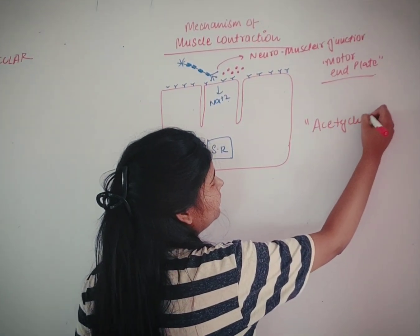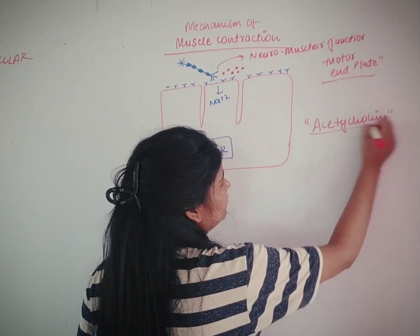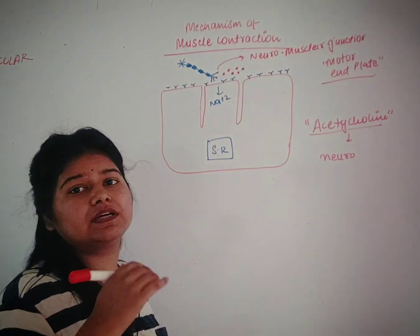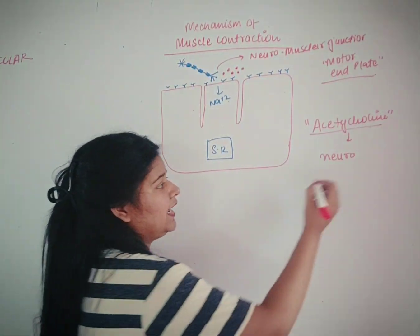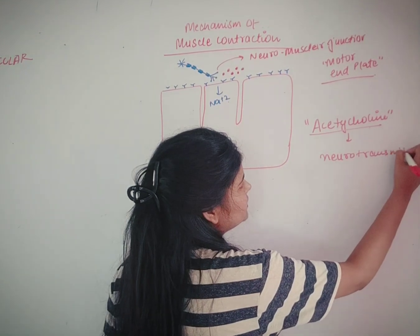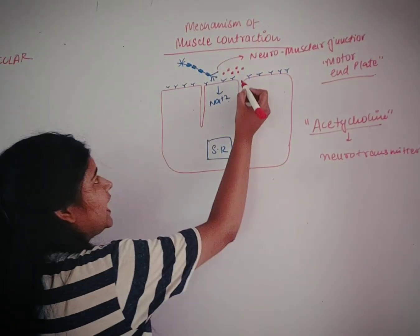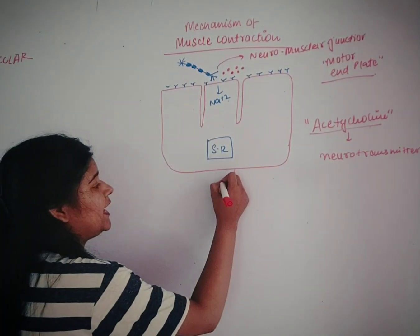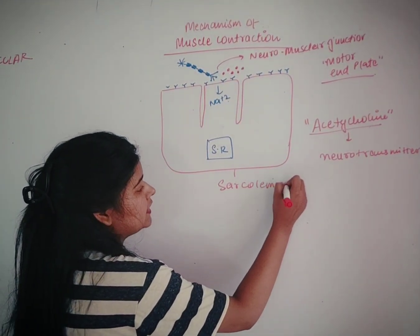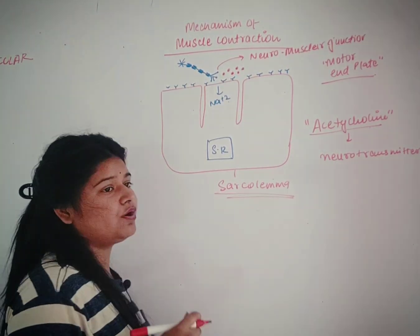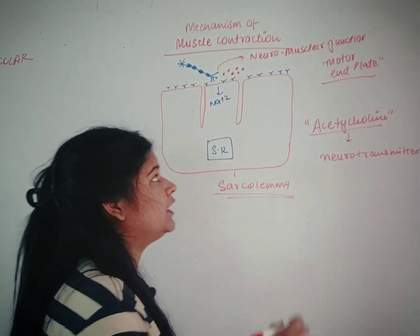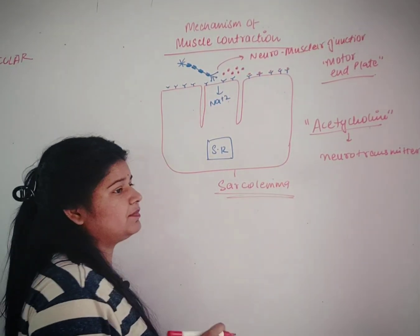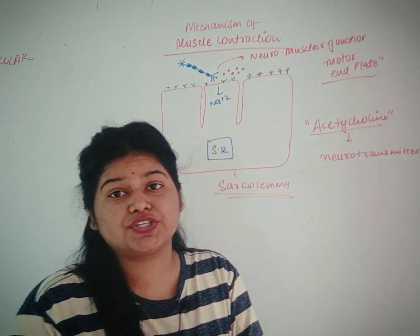The neurotransmitter which is emitted from the nerve ending of a neuron is acetylcholine — a very important point from the exam perspective. This neurotransmitter acetylcholine gets attached to the receptor of the sarcolemma. The sarcolemma is the plasma membrane of a muscle cell. When acetylcholine binds to the receptor of the muscle, there is a depolarization.